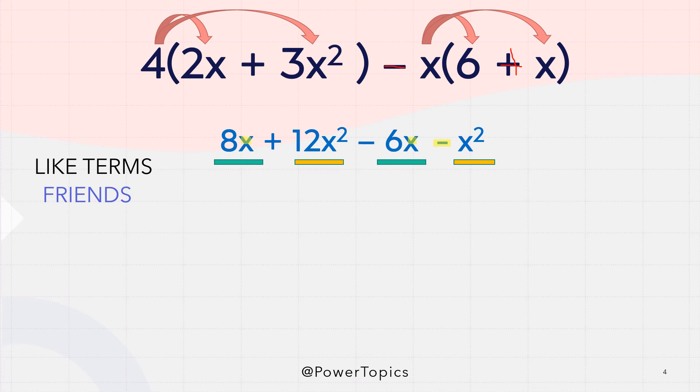So let us gather the like terms together on each side. So 8x and negative 6x. So 8x plus negative 6x, we get 2x. Now how we got that? Let me use an analogy.